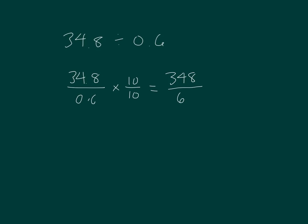And we can do that work. 6 goes into 34 five whole times because 5 times 6 is 30. 34 minus 30 is 4. Bring down the 8. 48 divided by 6 is 8. So 348 over 6 is equal to 58.